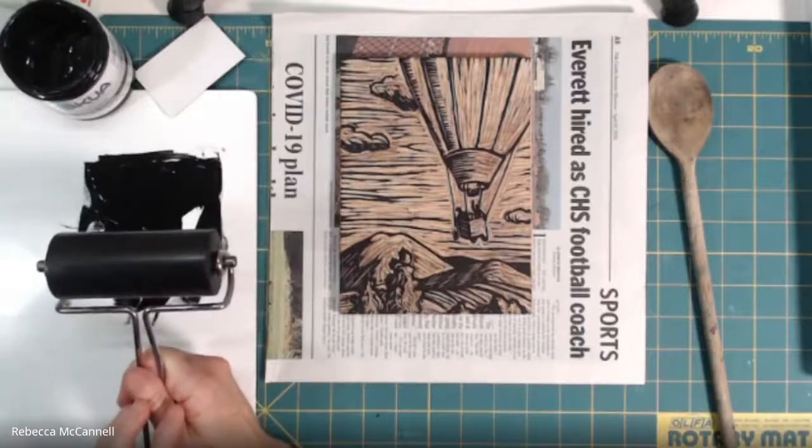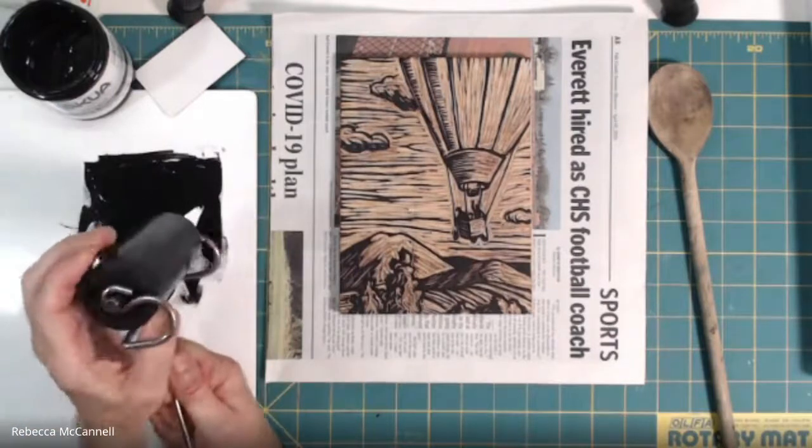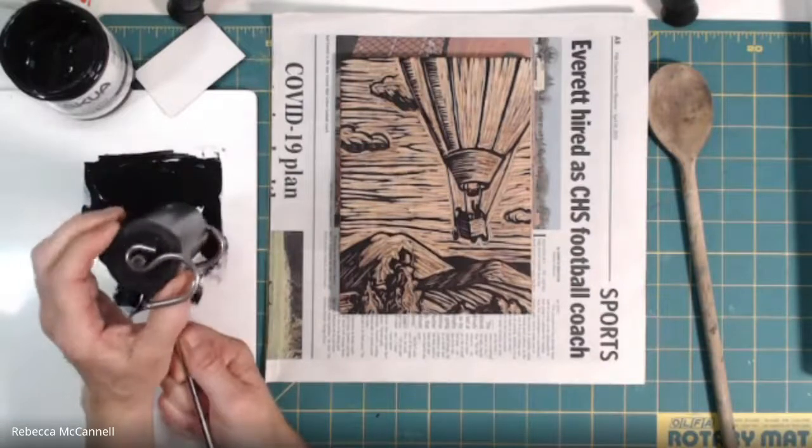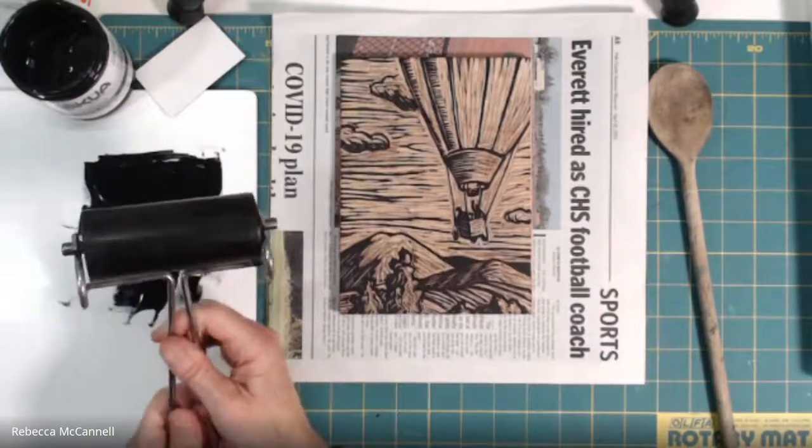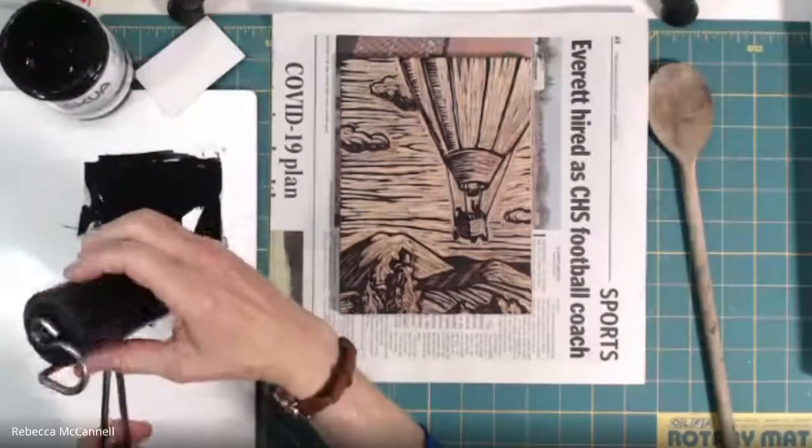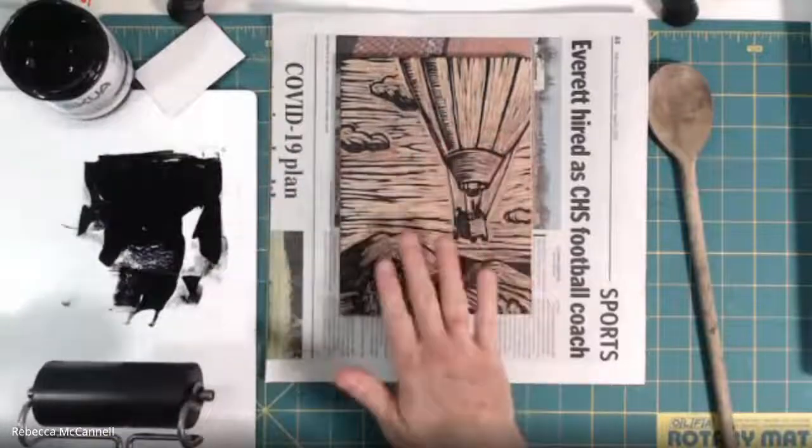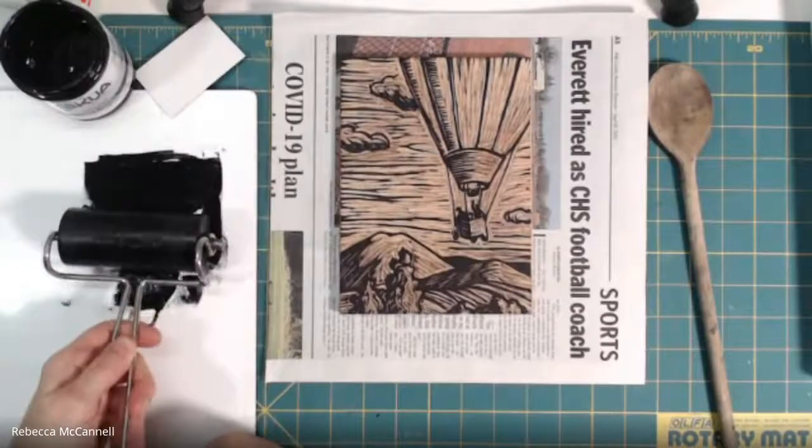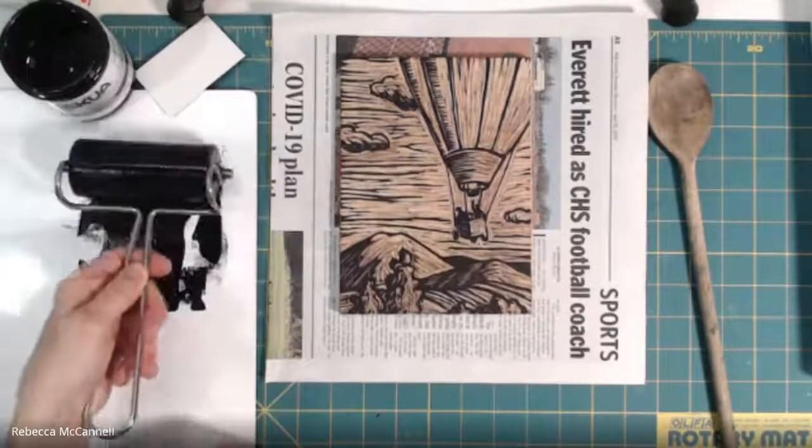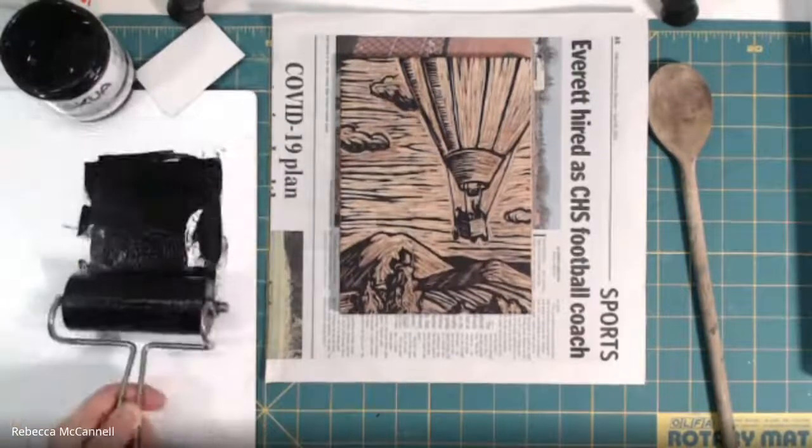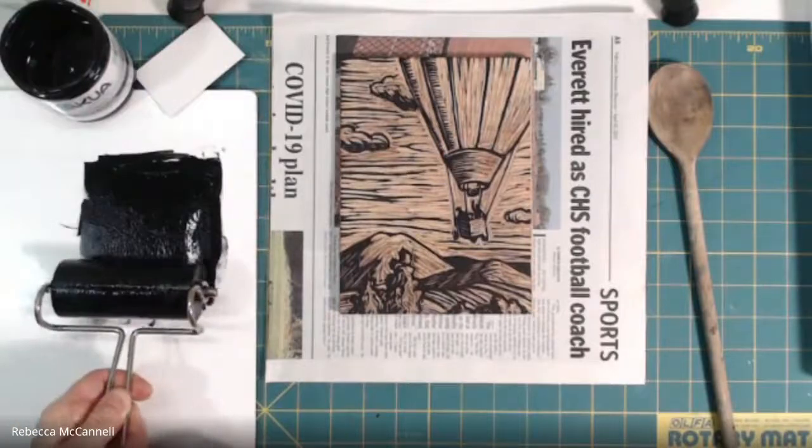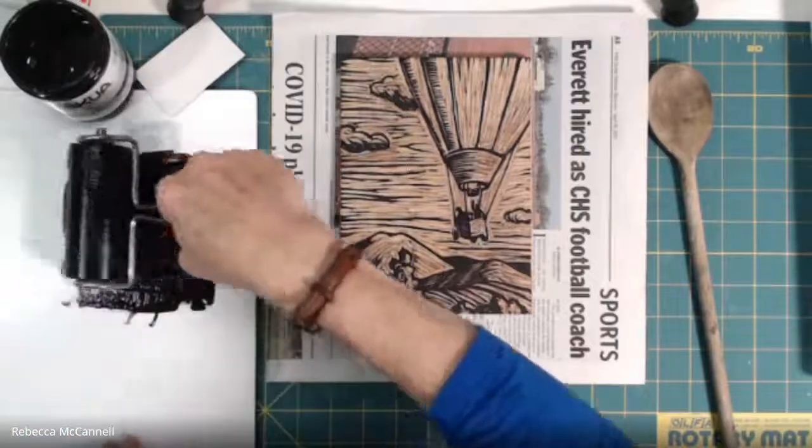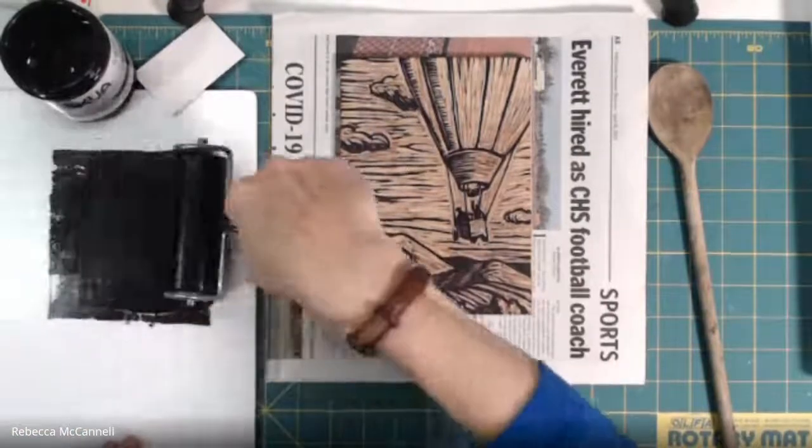This roller is moderately soft, a little bit harder than the Speedball brayers that you may have, but you don't want a brayer that's too hard because then it's hard to get the ink on all the surfaces. When you get to the bottom of the ink you need to lift it up and keep moving it. If you just keep going back and forth, the ink stays in the same spot on the roller each time and you're not really distributing it.